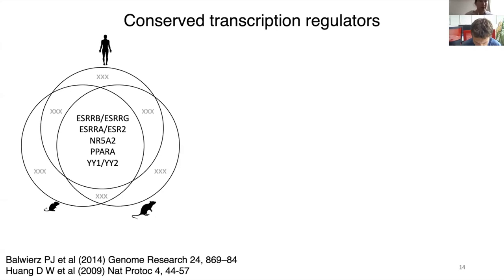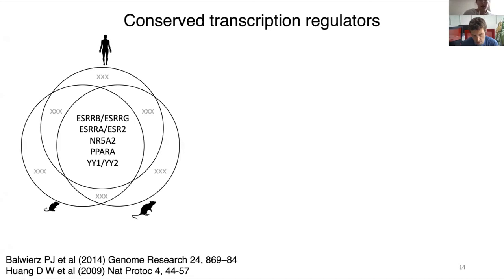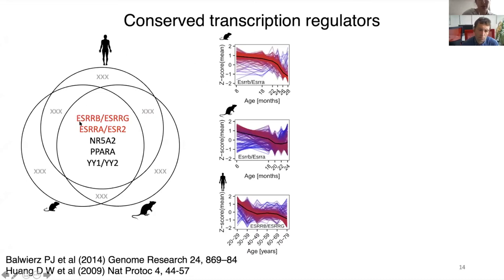To test this hypothesis, I applied the ISMARA tool developed in the lab of Professor Eric van Nimwegen at Biocenter, and estimated the activity of transcription factors using my RNA-seq datasets for mouse, rat, and human. I identified commonly regulated pathways during muscle aging across all species, some already known to be regulated during muscle aging. Using the ISMARA output, I also estimated the dynamics of targets of these transcription factors. The top targets of the estrogen-related receptor showed a majority decrease in expression during aging.